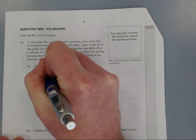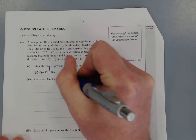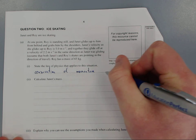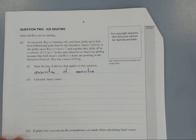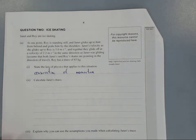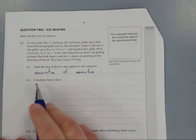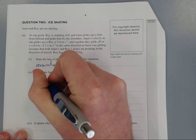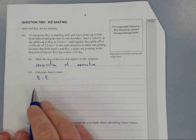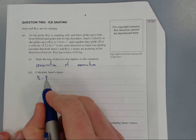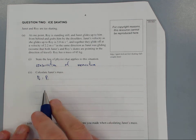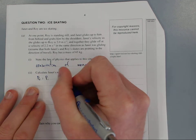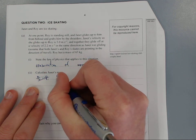Conservation of momentum. Calculate Janet's mass. Assuming no external forces, the final momentum should equal the initial momentum. I put f for final, i for initial. So initial momentum equals final momentum, Pi equals Pf.